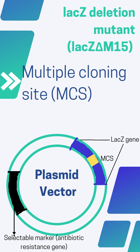There are many vectors designed with the lacZ gene. One example is the pUC18 vector. In the vector, there is a lacZ sequence within which there is a multiple cloning site — basically a site where there are several recognition sequences for restriction endonuclease enzymes, which are enzymes we use to cut and paste our gene of interest.